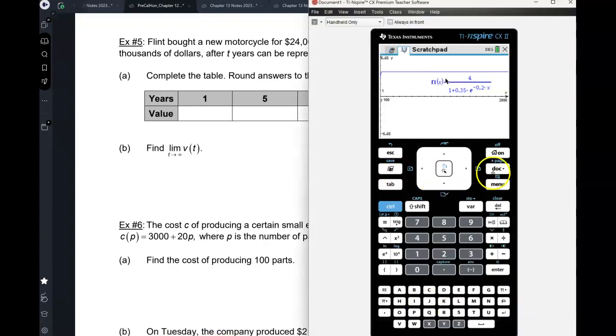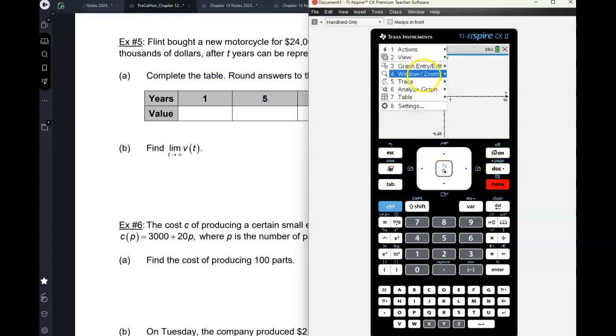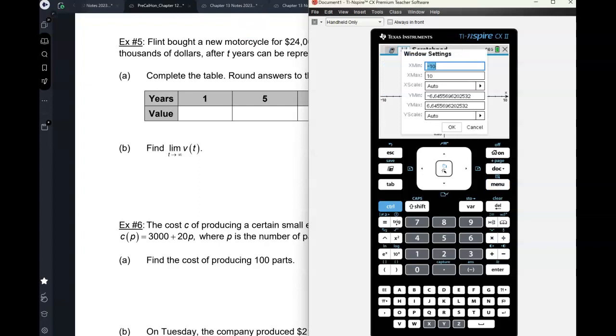So we have, I'm going to do doc B. I'm going to put in 24 times 0.98 to the power of x. Okay, how much did you buy this for? $24,000, correct. So let's fix the windows. Can everybody look up here for a minute? Let's fix the windows here. So menu, windows, settings.